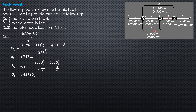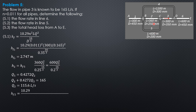Then Q2 plus Q5 equals 165. Substituting: Q2 plus 0.4272 Q2 equals 165. Solving gives Q2 equal to 115.6 liters per second. Having known Q2, we compute HF2: 10.29 times 0.011² times 360 times 0.1156² over 0.25 to the 16/3. So HF2 is equal to 9.737 meters.